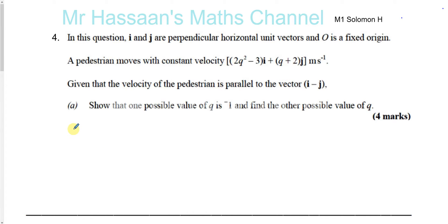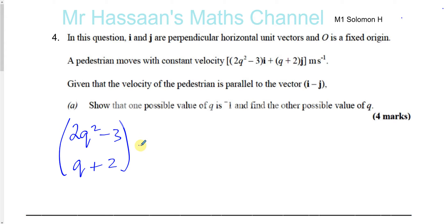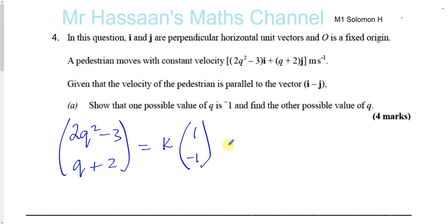Let's first write these as column vectors to make life simpler: (2q² - 3) as the horizontal component and (q + 2) as the vertical component. Now, if this vector is parallel to the vector i - j, then it's equal to some constant times that vector. When two vectors are parallel to each other, they are equal to a constant multiple of each other. So (2q² - 3, q + 2) equals k times (1, -1).